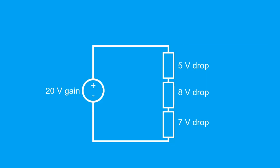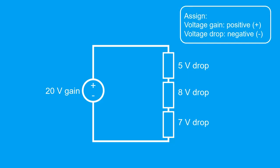To demonstrate Kirchhoff's voltage law, we need to assign any voltage gain as positive, and any voltage drops as negative. So that means this is positive, and the resistors are negative, negative, and negative.